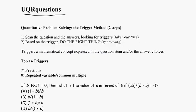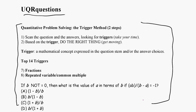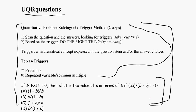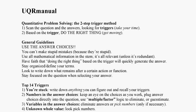On the UQR questions page, your first page should show some general guidelines and then an actual question. And the manual's first page should show content including what I call the top 14 triggers near the bottom. I will put both the questions and the manual up on the screen, so you don't have to have it printed — but it's certainly going to be very helpful to appreciate this free preview.